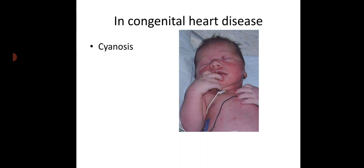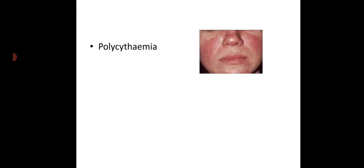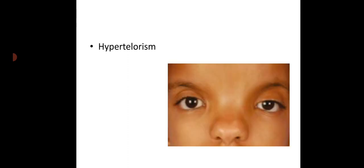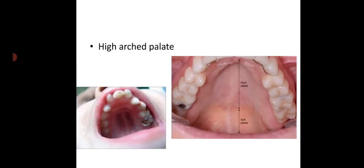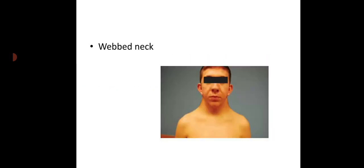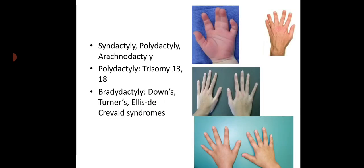In congenital heart disease, external features to look for include cyanosis, clubbing, polycythemia, hypertelorism, low-set ears, high arched palate, webbed neck, syndactyly, polydactyly, arachnodactyly. Polydactyly is seen in trisomy 13 and 18, brachydactyly in Down syndrome, Turner syndrome, and Ellis-van Creveld syndrome.